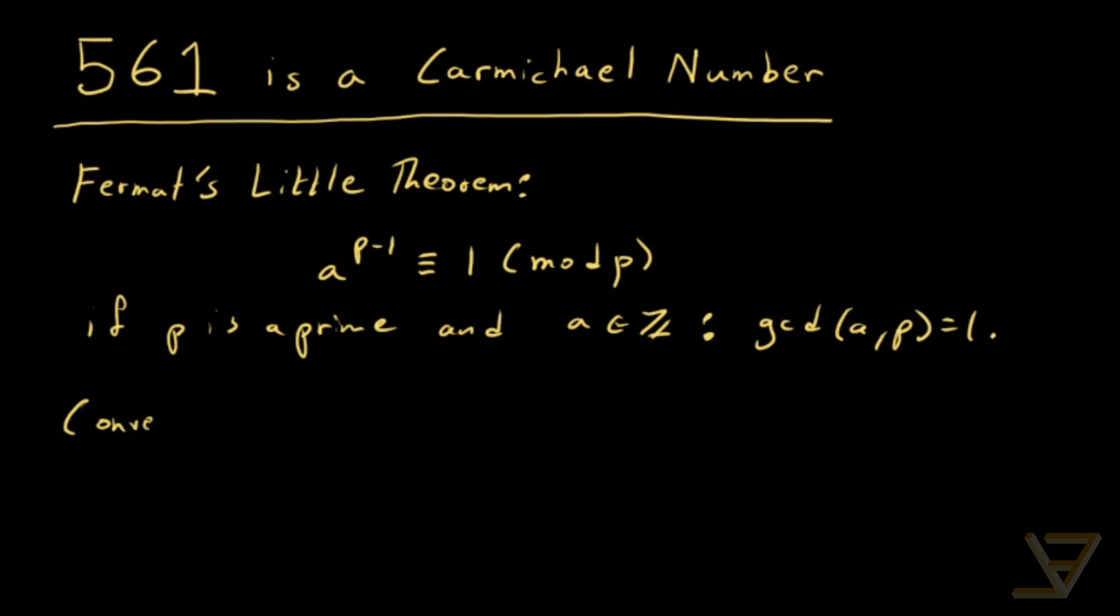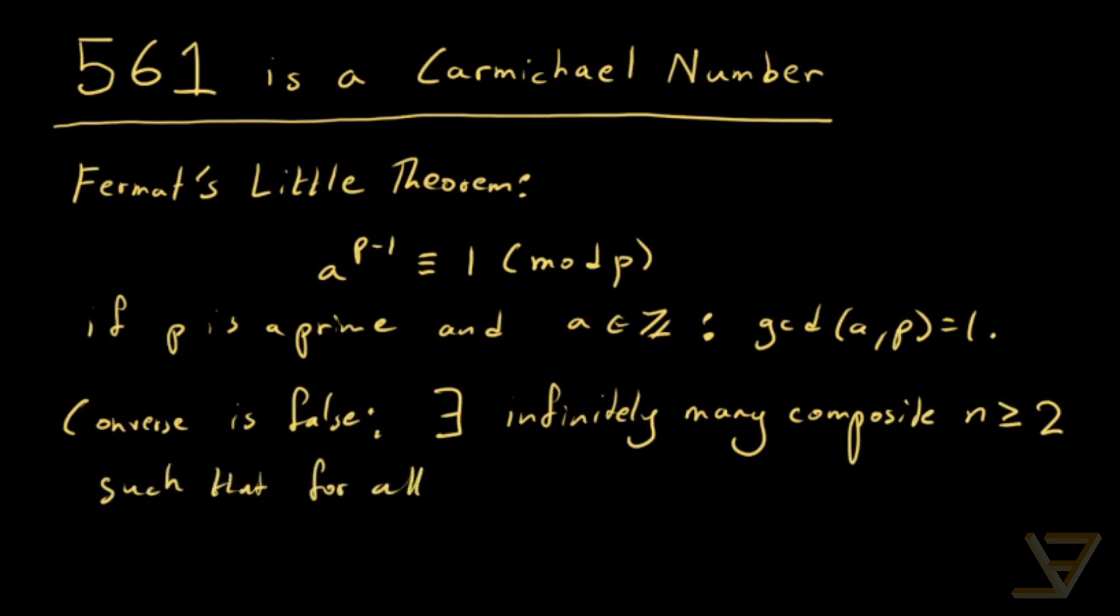The converse is not true because there exist infinitely many composite n ≥ 2 such that for all b in the integers where gcd(b,n) = 1, the following congruence holds: b^(n-1) ≡ 1 (mod n).